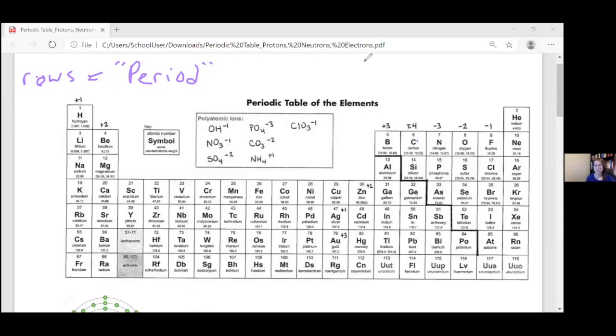Then we also can label things based on what column they're in. The columns, up and down, if you forget the difference between column and a row, think about a column that holds a building up. It goes up and down. The columns, we call groups. And actually, we don't count just from left to right. We'd say everything in this is group one, group two. There are different approved naming systems. The one we're going to use, skip the middle.